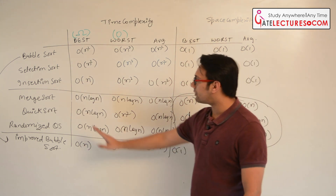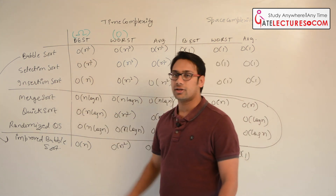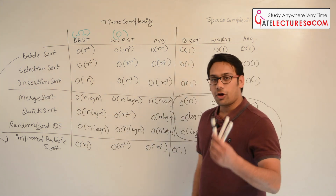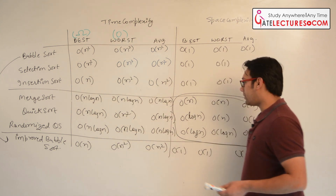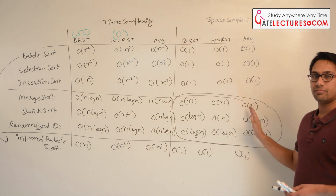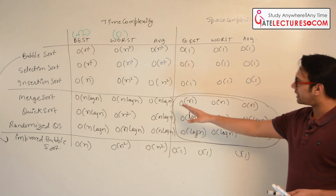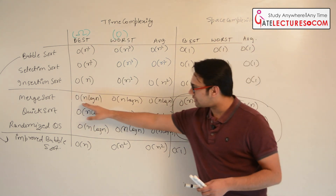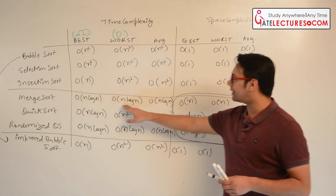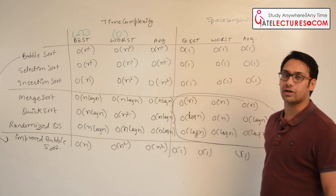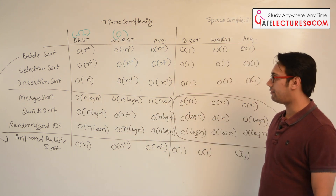In case of merge sort, merging takes order of n space. Because of that extra space usage, in all three cases — best, average, and worst — merge sort takes order of n log n time.